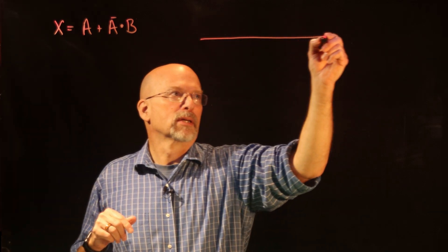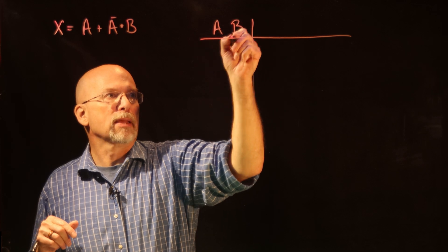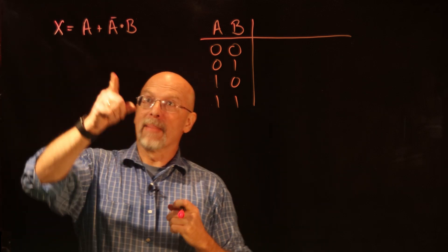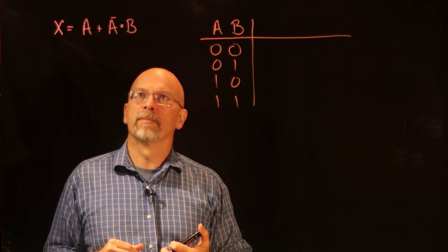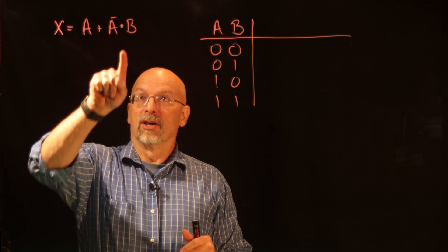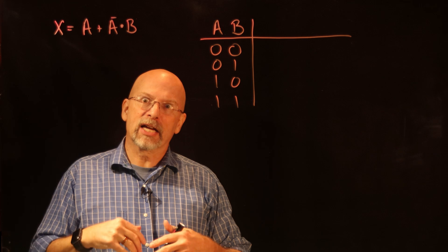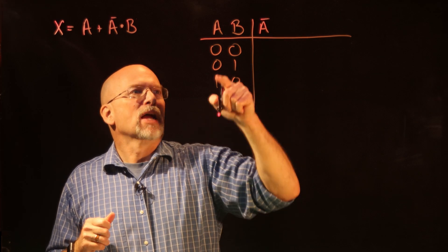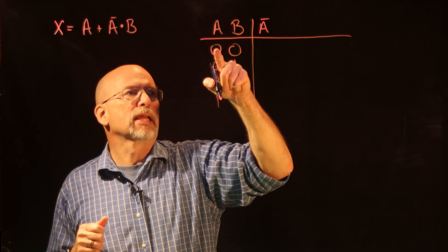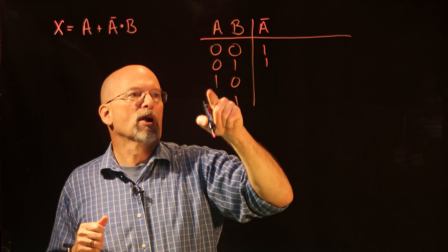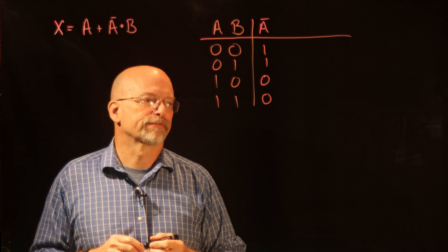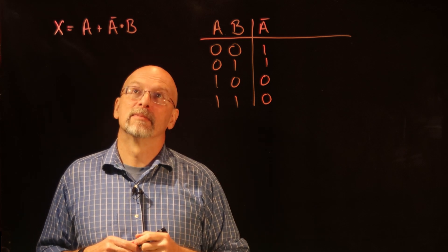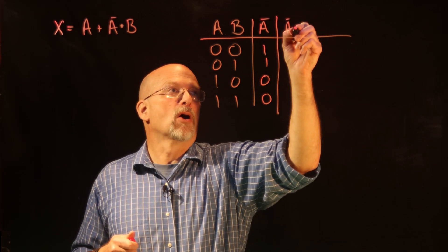Let's do the truth table — just four rows: a=0,b=0; a=0,b=1; a=1,b=0; a=1,b=1. Now treating this as a mathematical expression, the first thing to do is the AND, but before that I need to take the inverse of a. So a_bar flips every zero to a one and every one to a zero.